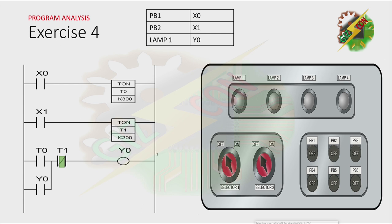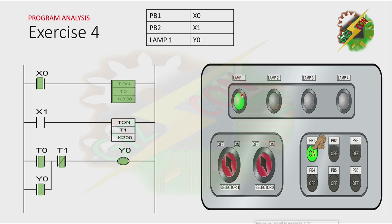Let's analyze this program. Let's press PB1. X0 is energized, and that will cause T0 here to activate after 3 seconds. Because T0 is activated, all the contacts of T0 will change. And because this one is normally open, it will be closed, and that will cause Y0 here to turn on. Because Y0 is turned on, lamp will turn on.